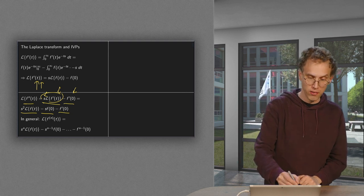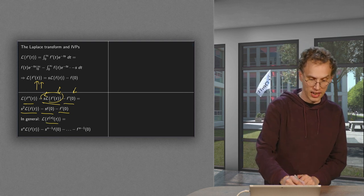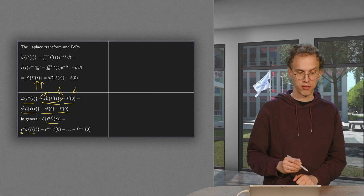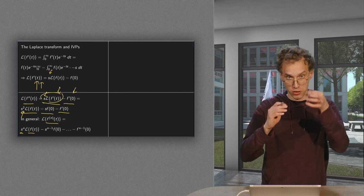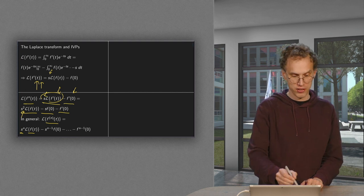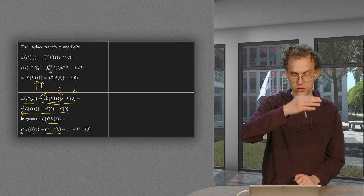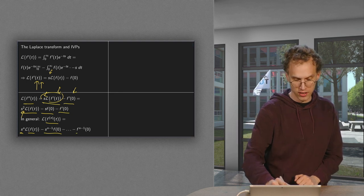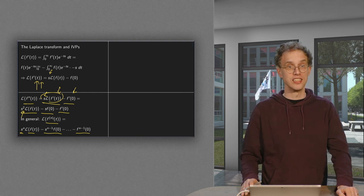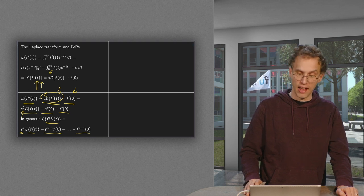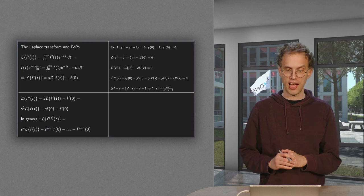In general, if you have the nth derivative of f, you get s to the power n times the Laplace transform of f — just as you got s squared and s in the previous cases. And you have the initial conditions: s to the power n minus 1 times f(0), up to all terms, with the last one being the (n minus 1)th derivative of f evaluated at 0. That is the general formula for the Laplace transform of the nth derivative of f.